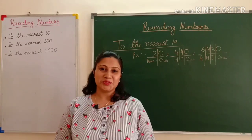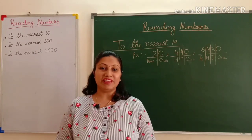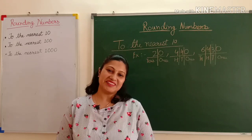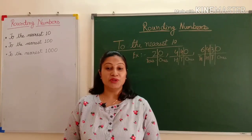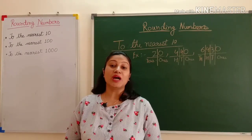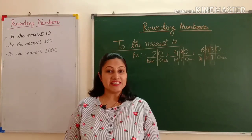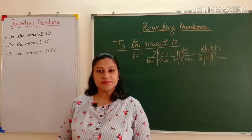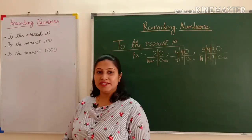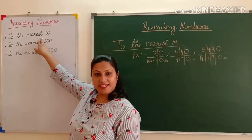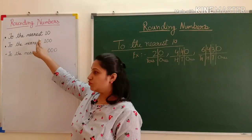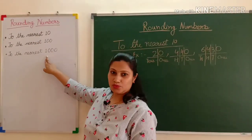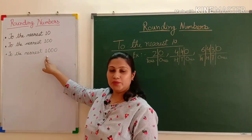Good morning, dear students. Welcome to Zenit Tutorials. My name is Kavita Verma. Today I am going to explain rounding numbers in a very easy and simple way. Rounding numbers are of three types: to the nearest ten, to the nearest hundred, and to the nearest thousand. Let's do them one by one.